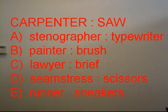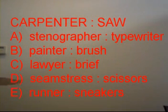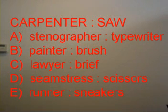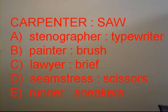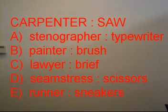We are going to start easy and then give it a shot. Our question words are CARPENTER and SAW. What is the relationship between the two? A carpenter uses a saw for his job. That's a good sentence. Let's apply it to our choices. A stenographer uses a typewriter for his job — yes, that one works. A painter uses a brush for his job — that one works too.